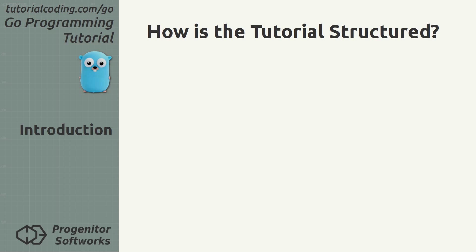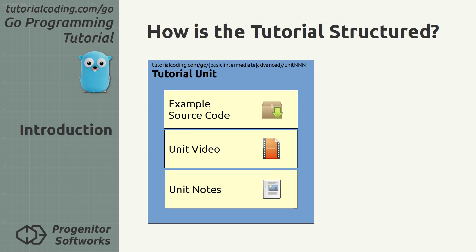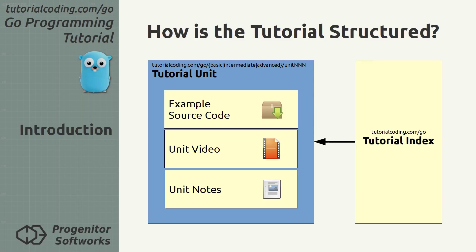How is the tutorial structured? The tutorial has an incremental sequence of units that start at a basic level and get progressively more advanced. They build on each other and focus on specific subjects. Each unit builds on an example application that illustrates the subject. This is accompanied by a unit video embedded from YouTube and unit notes that provide a textual description of the unit. The tutorial units are all listed by level in the tutorial index with their title and summary, found at tutorialcoding.com.